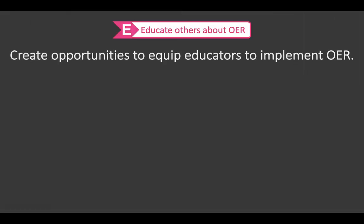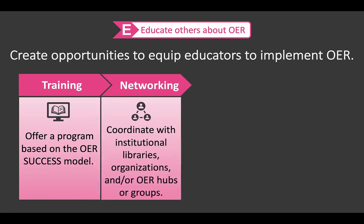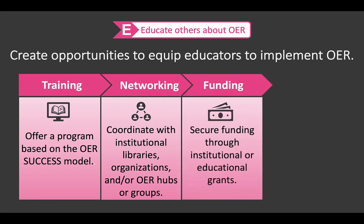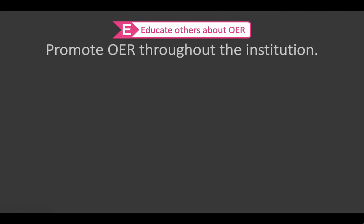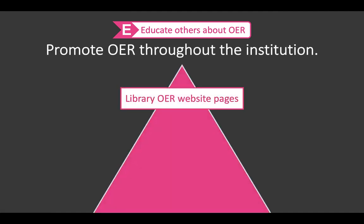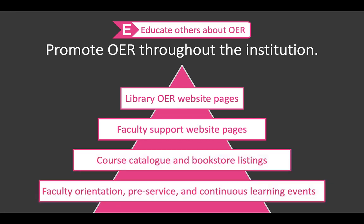Next, create opportunities to equip teachers and faculty members to implement OER, which would include training opportunities offering a program based on the OER success model. Networking opportunities coordinate with institutional libraries, organizations, and even OER hubs or groups. Funding opportunities secure funding through institutional or educational grants. And finally, badging opportunities — utilize micro-credentials as a non-monetary incentive. The final component is to promote OER through the institution, using library OER website pages, faculty support website pages, course catalog and bookstore listings, and faculty orientation, pre-service, and continuous learning events for this promotion.